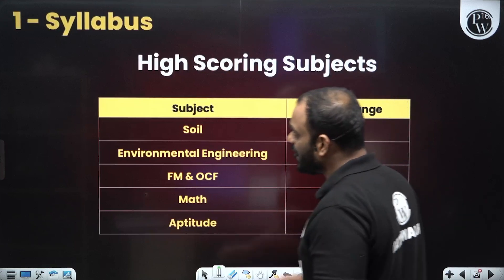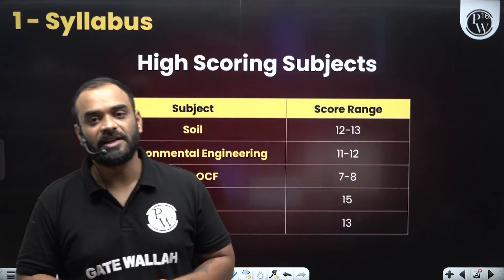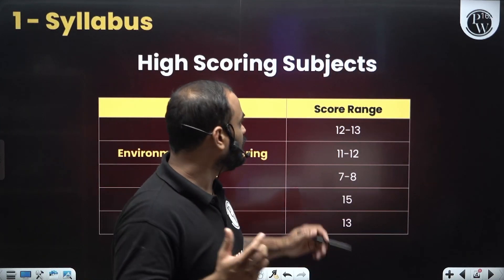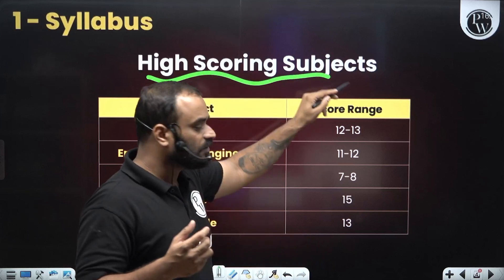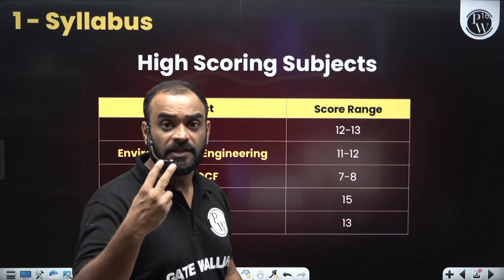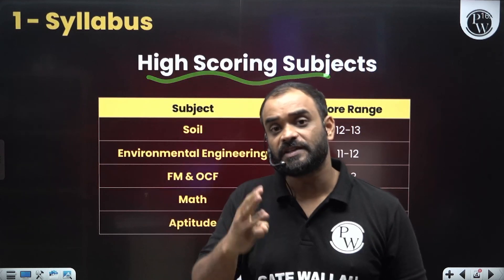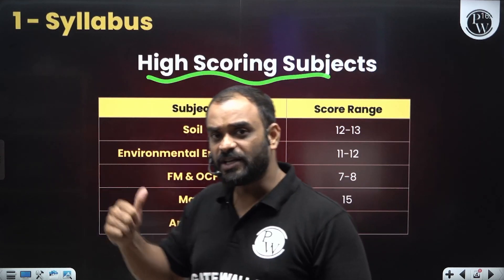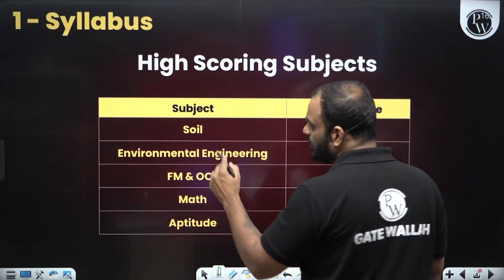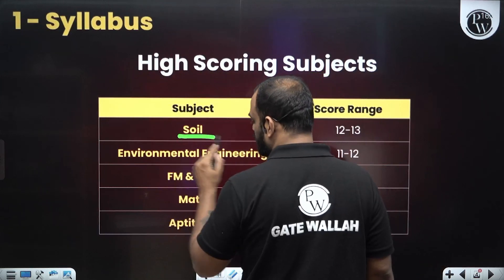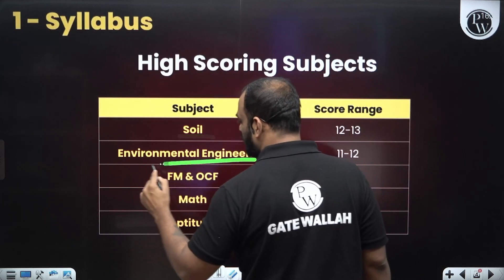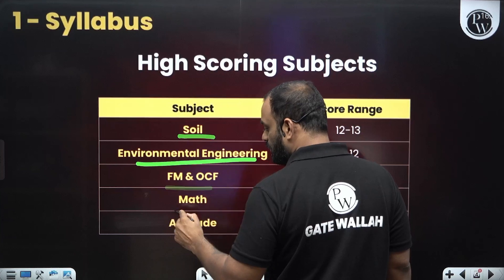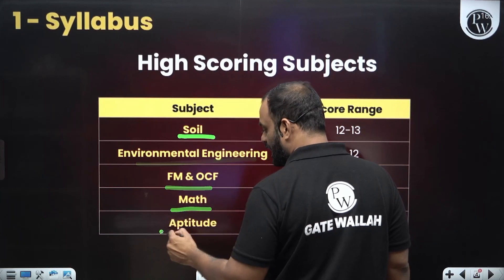I have divided the syllabus into three categories. One is high scoring subject, second is medium scoring subject, and third is low scoring subject. In high scoring subjects you can see here: soil mechanics, environmental engineering, FM and OCF, mathematics and aptitude.